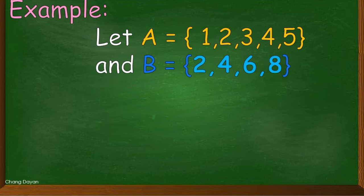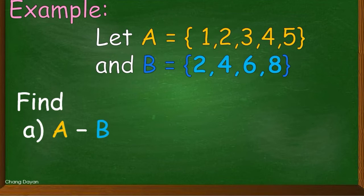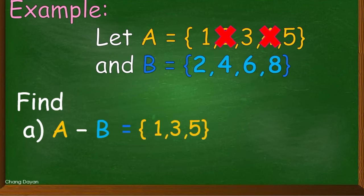Now let us find the difference between A and B. Our answer must be the set of elements in set A that cannot be found in set B. As we all know, 2 and 4 can be found in set B, that's why we excluded these two. Therefore, our answer is 1, 3, and 5.